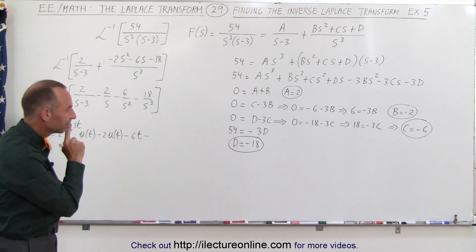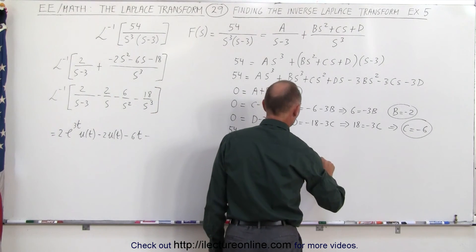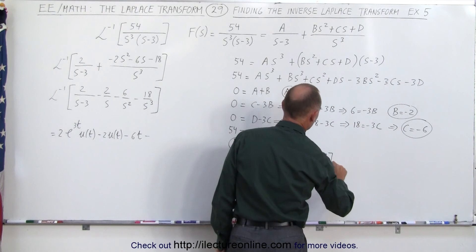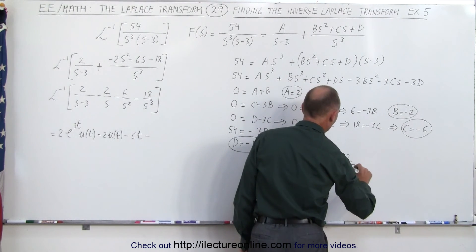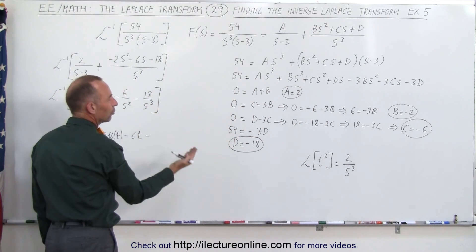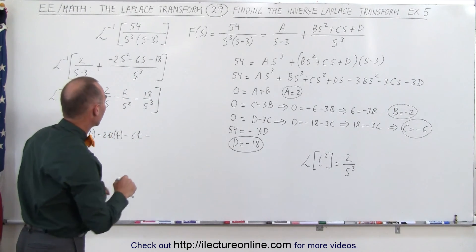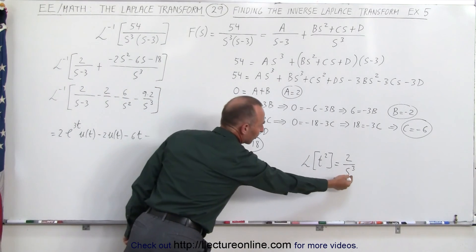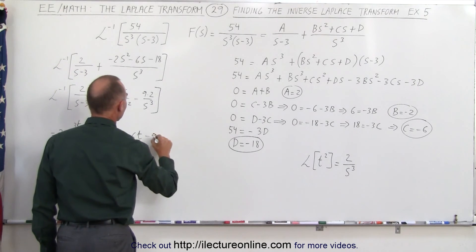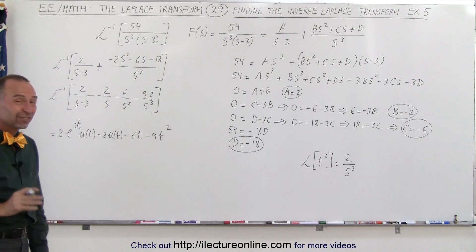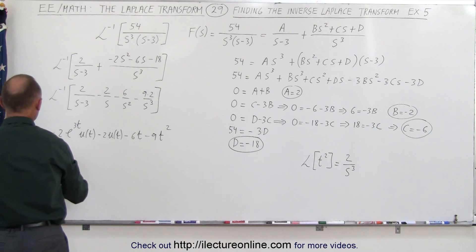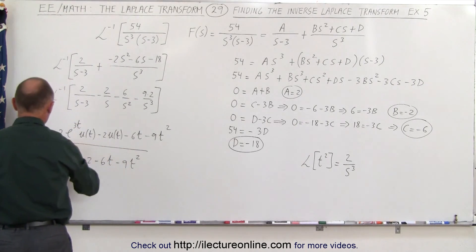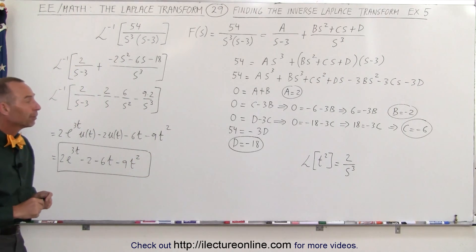Here we get minus 6 times t. Now we have to be careful with the last term: the Laplace transform of t squared is equal to 2 over s cubed. So I need a 2 over s cubed to take the inverse Laplace transform and get the t squared term. With minus 18 over s cubed, I can write this as minus 9 times 2 over s cubed, which gives minus 9 t squared. Simplifying, the final answer is 2e to the 3t minus 2 minus 6t minus 9t squared. And that's the inverse Laplace transform of the original problem.